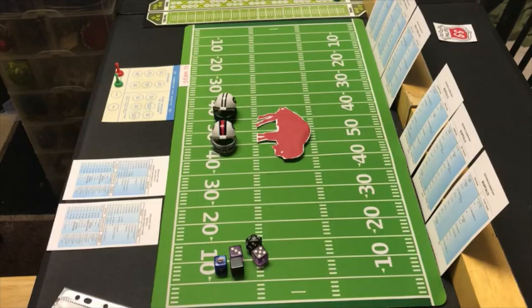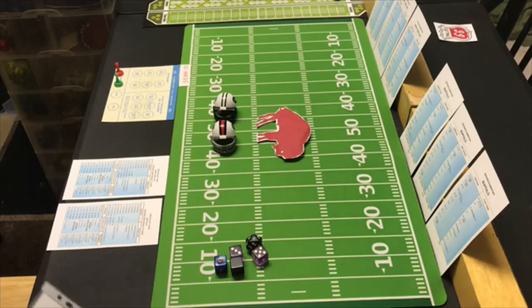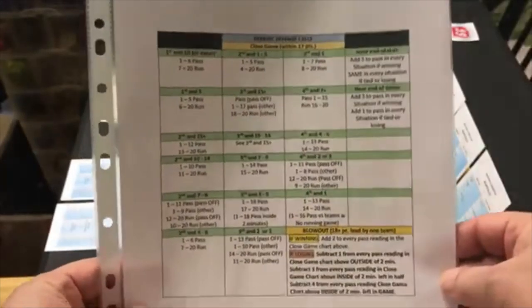Are you ready for some football? Hello sports fans, welcome back to card and dice football. Today we've got the 1972 Buffalo Bills against the 1972 New York Jets. Remember the 1972 Jets were only two or three years removed from a Super Bowl. They feature Joe Namath at quarterback, while the Bills feature OJ Simpson at running back and a quarterback I've never heard of.